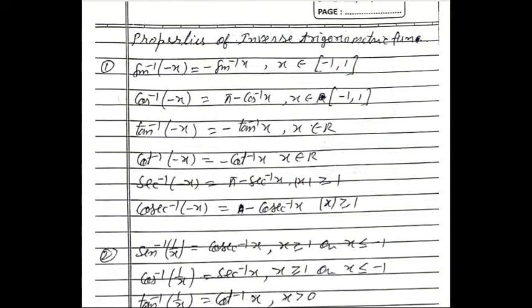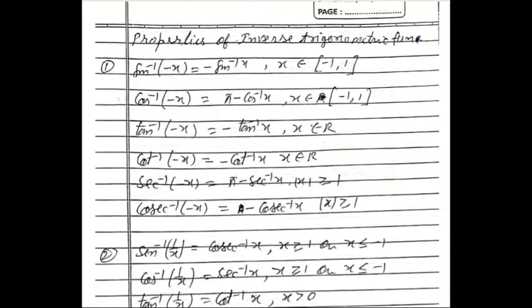Properties of inverse trigonometric functions. First formula: sin⁻¹(−x) = −sin⁻¹x, for x belonging to [−1, 1].